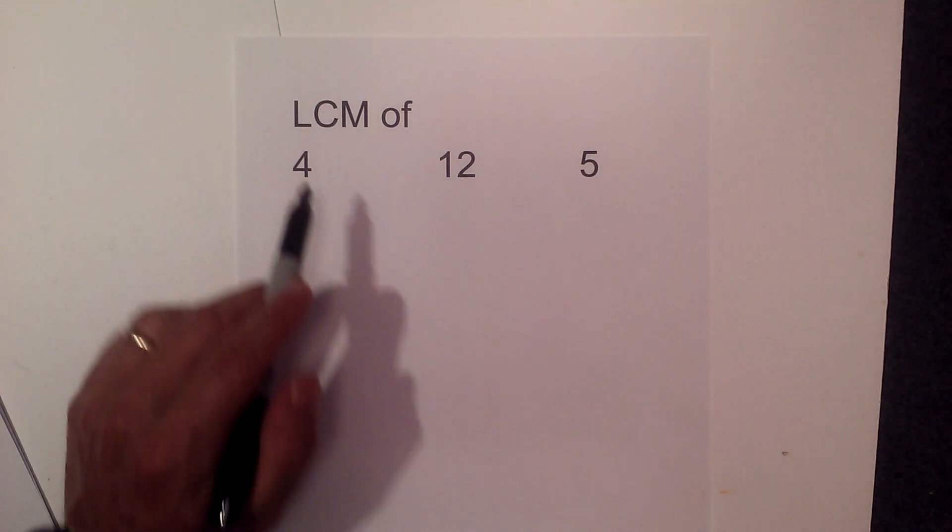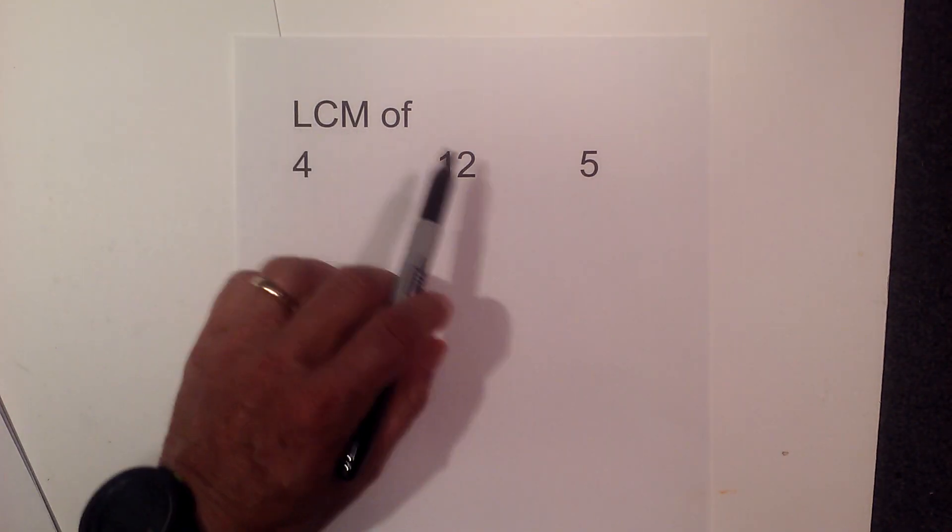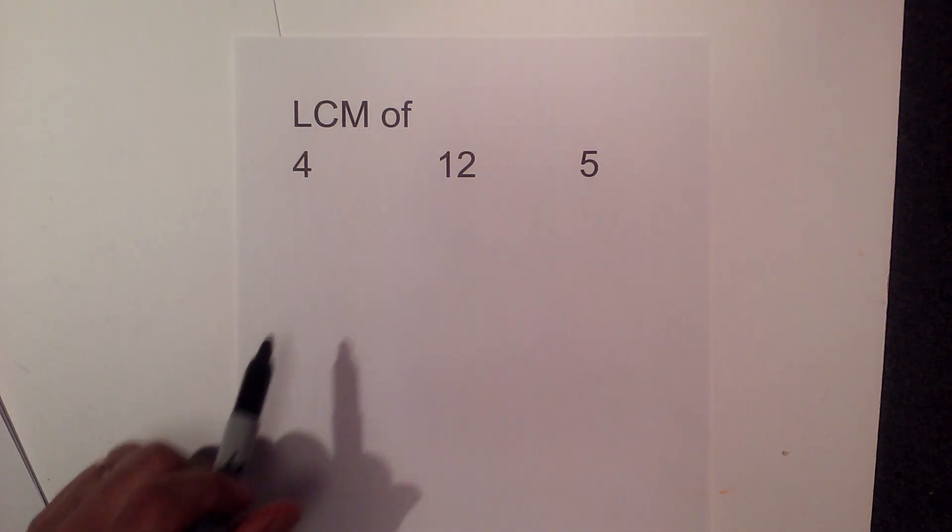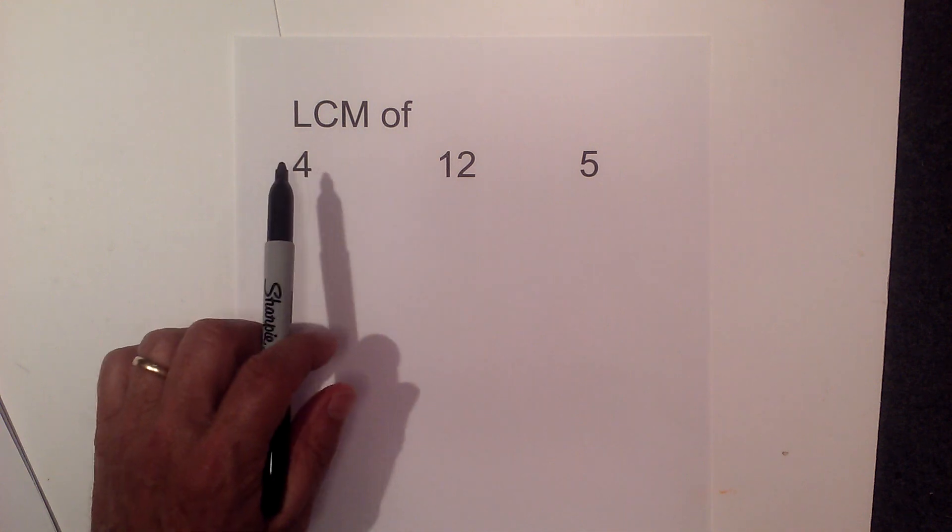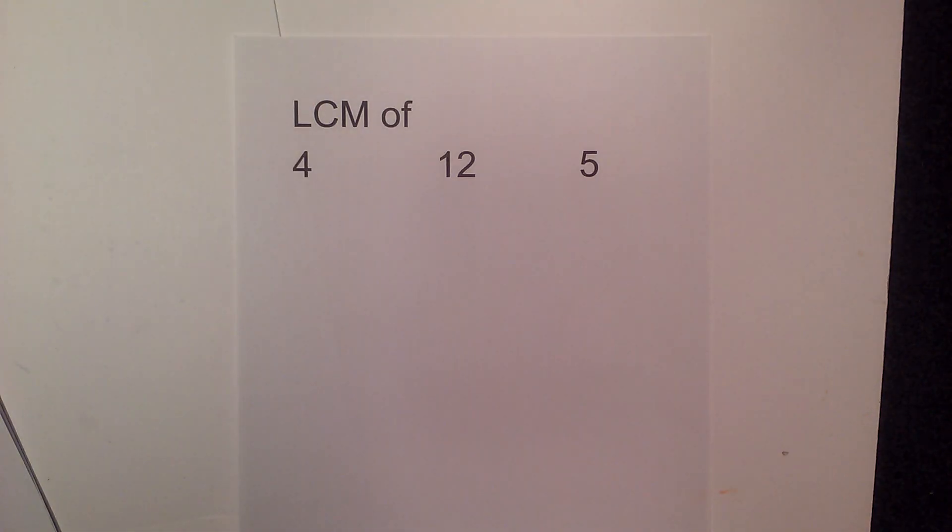In this video let's find the lowest common multiple or the least common multiple of 4, 12, and 5. Remember the least common multiple is the least or smallest number that these three numbers will multiply into evenly.